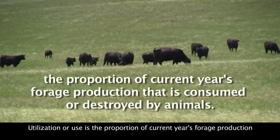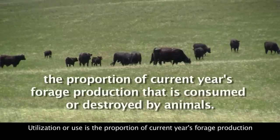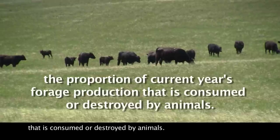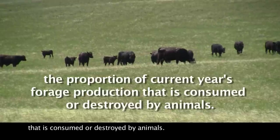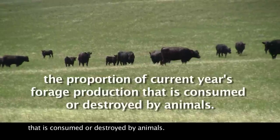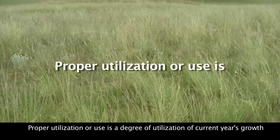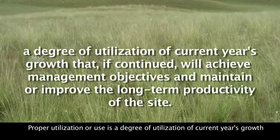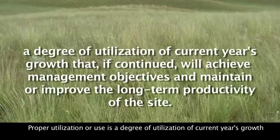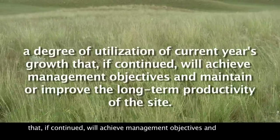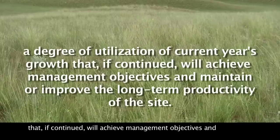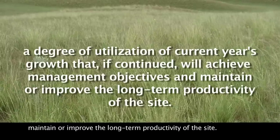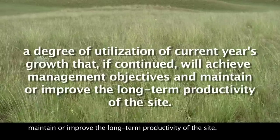Utilization or use is the proportion of current year's forage production that is consumed or destroyed by animals. Proper utilization or use is a degree of utilization of current year's growth that, if continued, will achieve management objectives and maintain or improve the long-term productivity of the site.